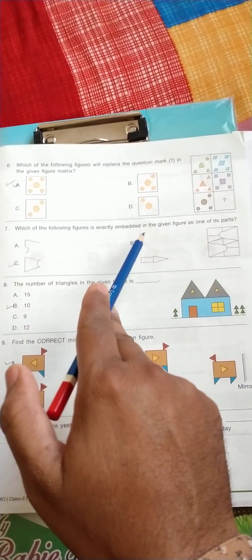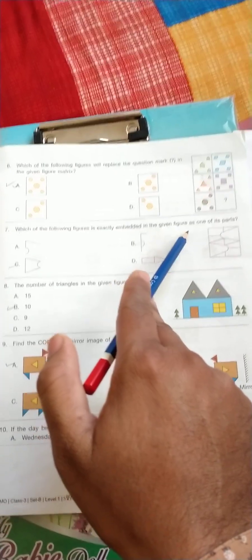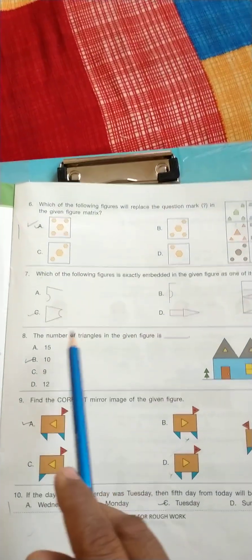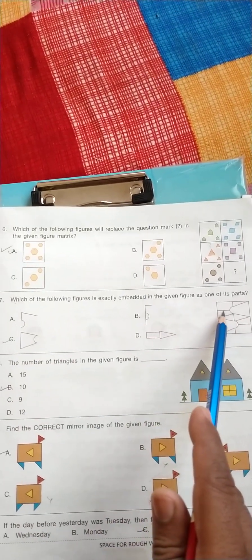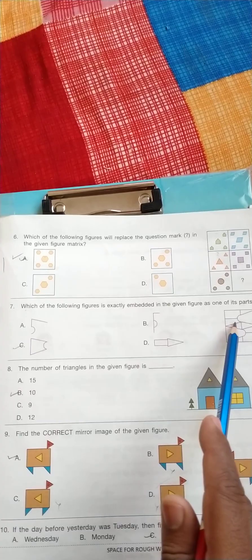Question number seven: which of the following figure is exactly embedded in the given figure as one of its part. So the correct answer is C because C is embedded here. Remaining all three are not embedded in this figure.